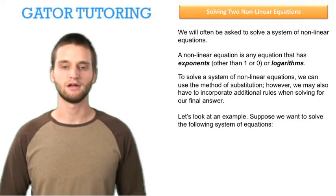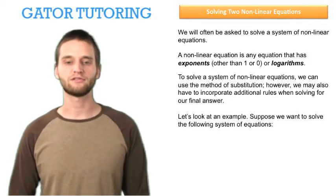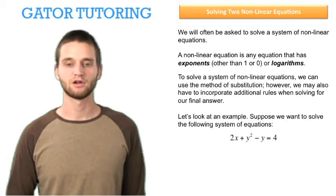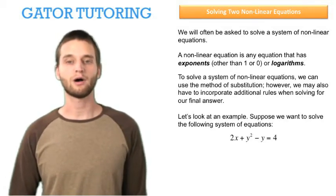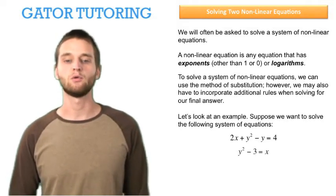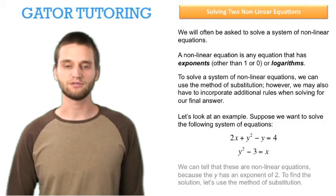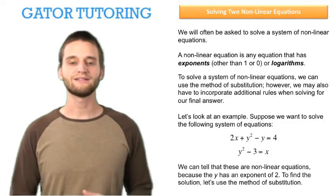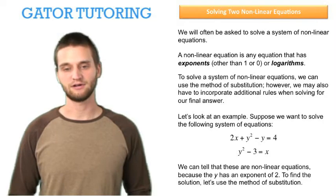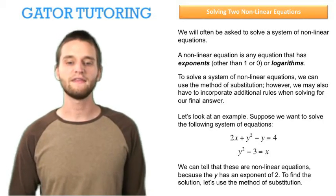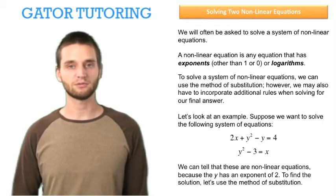Let's look at an example. Suppose we want to solve the following system of equations: 2x plus y squared minus y equals 4, and y squared minus 3 equals x. We can tell that these are nonlinear equations because the y exponent is 2. To find the solution, let's use the method of substitution.